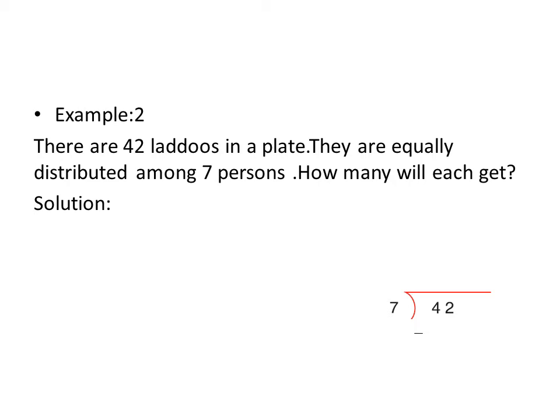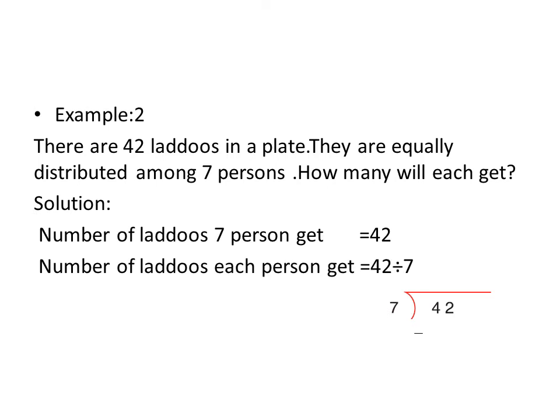It is clear from the statement that the number of laddus 7 persons get is 42, and you have to find the number of laddus each person gets. Here, you have been given the number of laddus more persons get and have to find the number 1 person gets — then what will you do? You will divide.